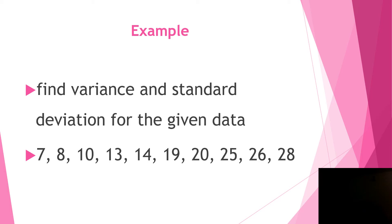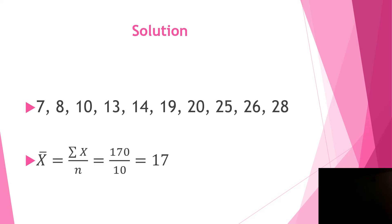Now let's consider a simple example for beginners on how to find variance and standard deviation for a given data set. The data set includes: 7, 8, 10, 13, 14, 19, 20, 25, 26, and 28. We will find variance and standard deviation for this data. First, as with mean deviation, we need to find x̄.